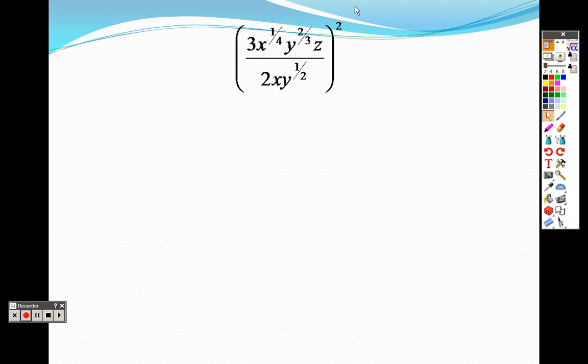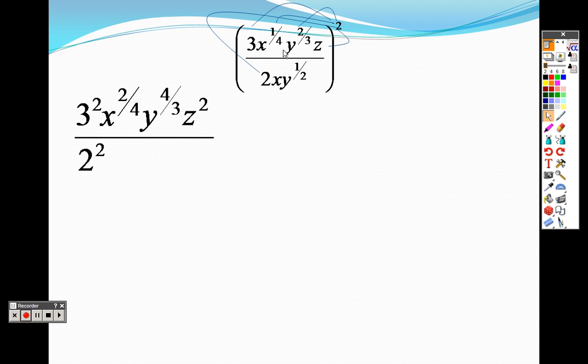This means I can take that two through to everything, so that is three squared, that is x to the two-over-four, that is y to the four-over-three, and that is z squared on the bottom, two squared, that is x squared, and that is y to the two-over-two.